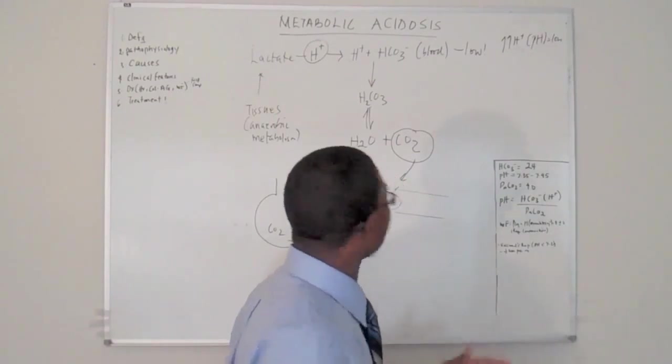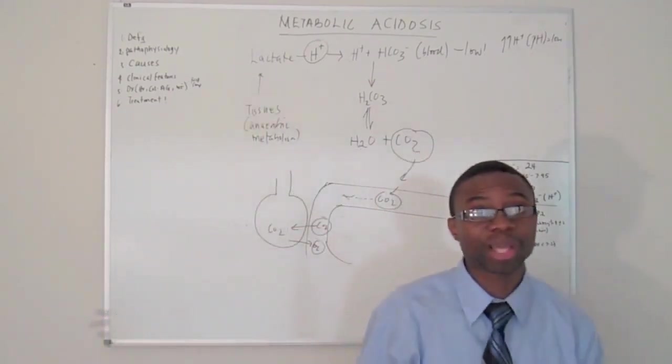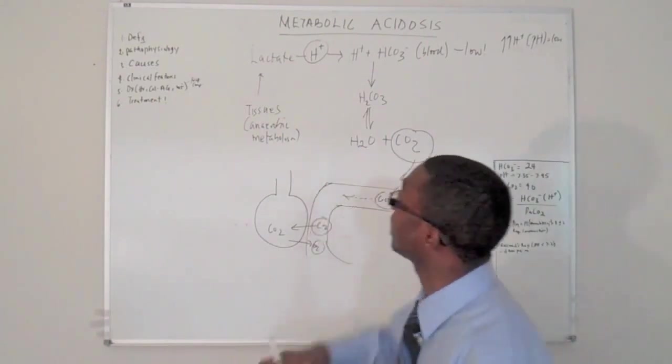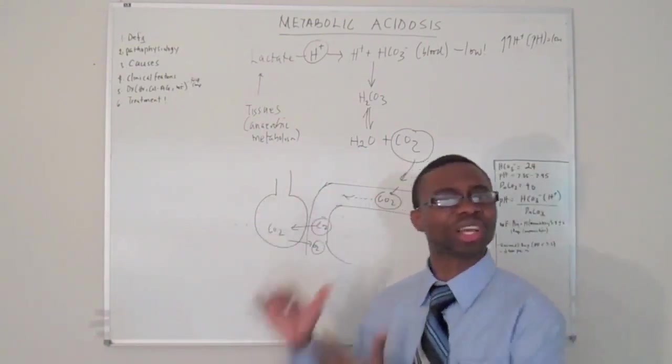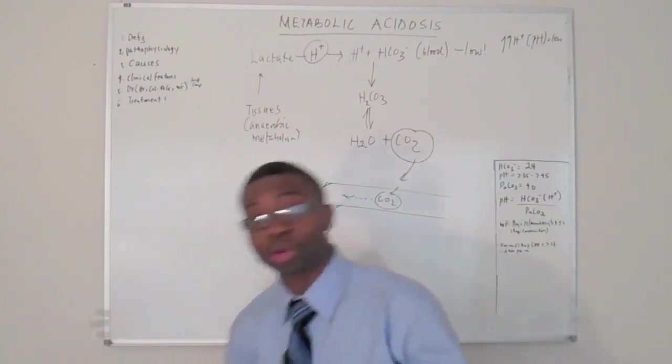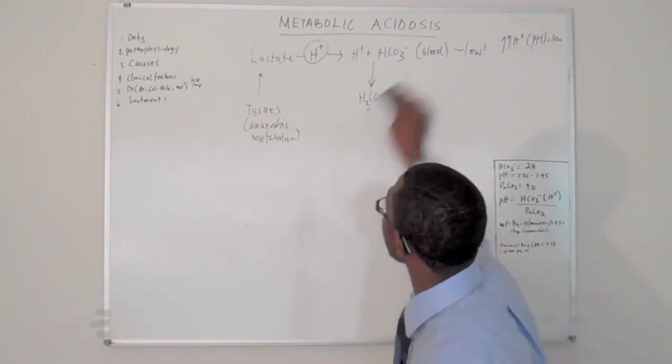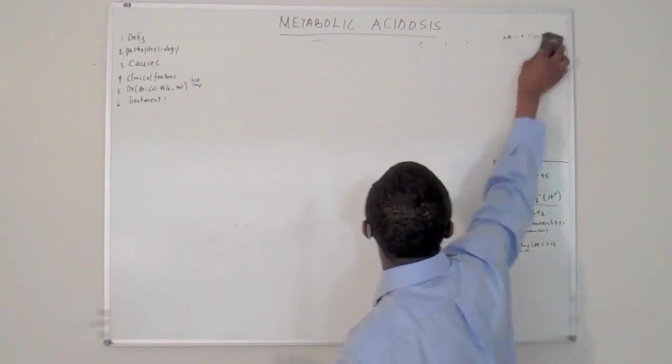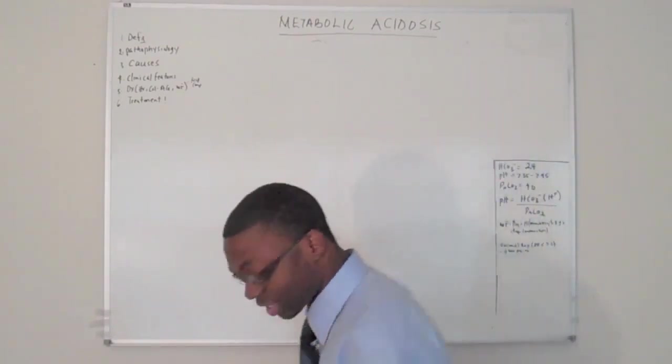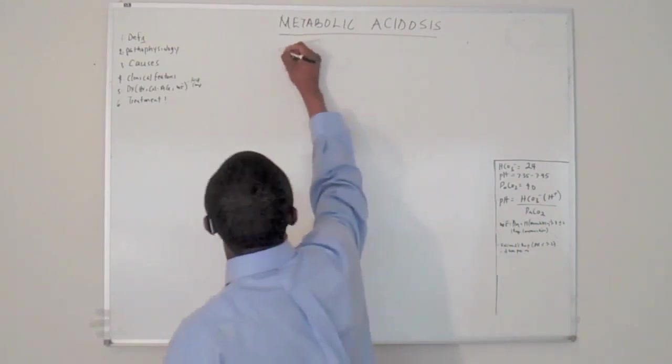But, we're going to talk about what actually causes decreased tissue perfusion that we talked about in the beginning. So, from here on, we're going to move on to what actually causes this. Because if you don't know what causes this, there's no point, right? You might just know the pathophysiology. But, if you don't understand what is causing it, we might as well just be wasting our time again. So, let's move on to causes of metabolic acidosis.